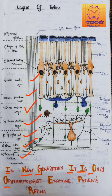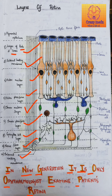'O' in 'only' stands for the outer plexiform layer, and 'O' in 'ophthalmologist' stands for the outer nuclear layer. 'E' in 'examine' stands for the external limiting membrane. 'P' in 'patient' stands for the photoreceptors — that is, rods and cones.